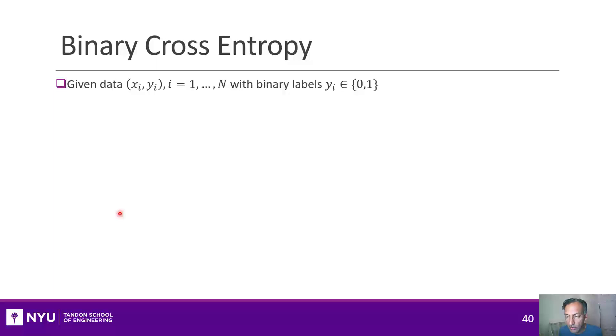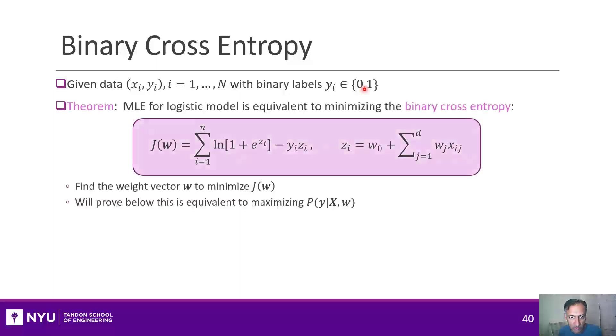With that in mind, I'm going to show you how to compute the likelihood for the binary classification problem. Again, imagine we have n samples with binary labels. The key idea is this result, that if you do maximum likelihood estimation for the logistic model, it's equivalent to minimizing this function.